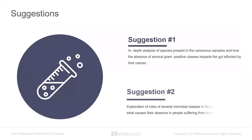Suggestions for future research include in-depth analysis of the species present in cancerous samples and how the absence of several gram-positive bacteria classes impacts the gut and affects liver cancer. Also, exploration of the roles of several microbial classes in gut bacteria and what causes their absence in people suffering from liver cancer.